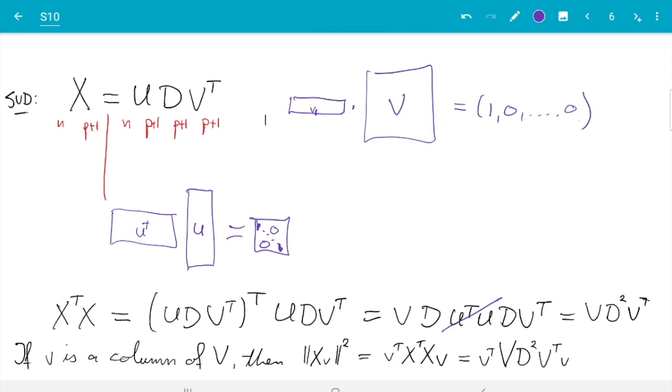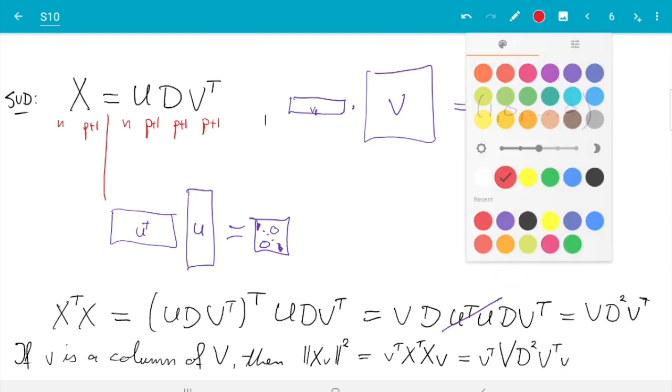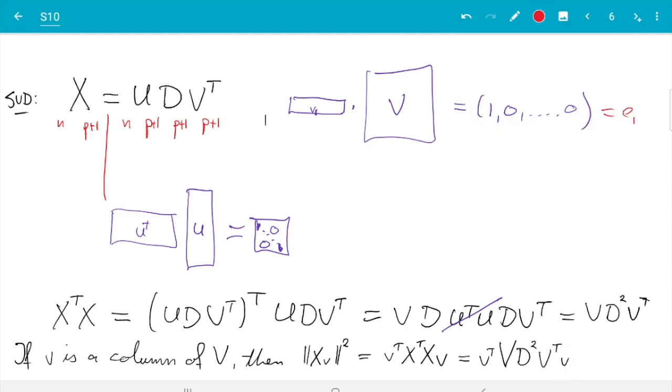Similarly, if I multiply any other column, not the first one, then I get a vector which is all zeros except in the position corresponding to the column I get a one. So this expression here is actually rather simple, because this one here is a vector which has only one entry which is one. Let's just call it e1, and then vk, the k-th column, times V transpose is ek—that's the standard basis vectors.